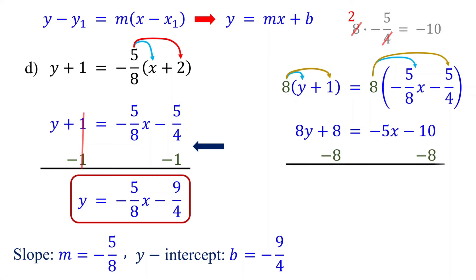Next, subtract 8 from both sides to isolate the Y term. Negative 10 minus 8 is negative 18. Finally, divide both sides by 8 to isolate Y. Remember to divide each term. These cancel, leaving Y. Dividing both negative 18 and 8 by 2 gives us negative 9 over 4.